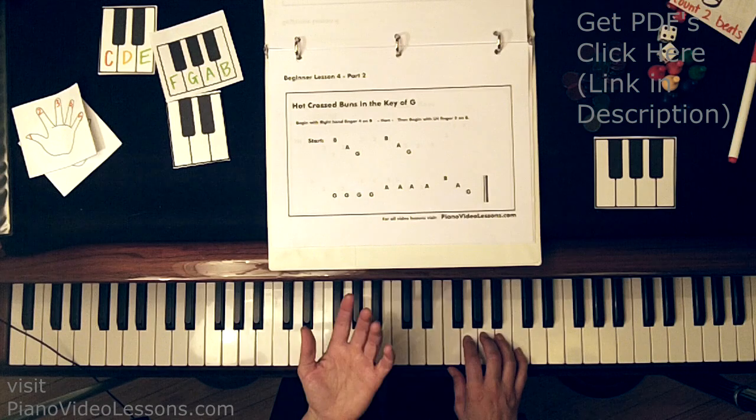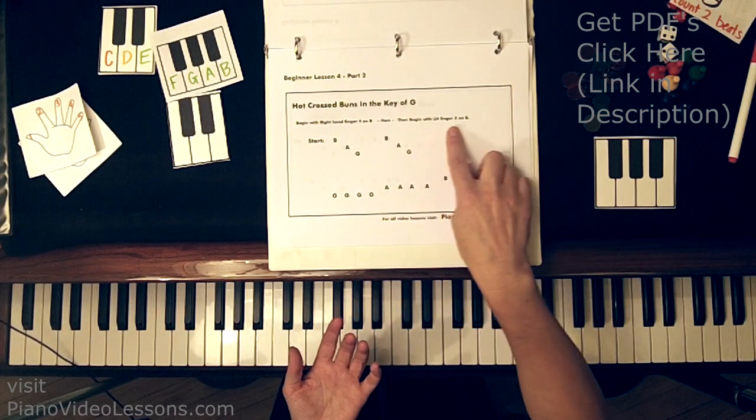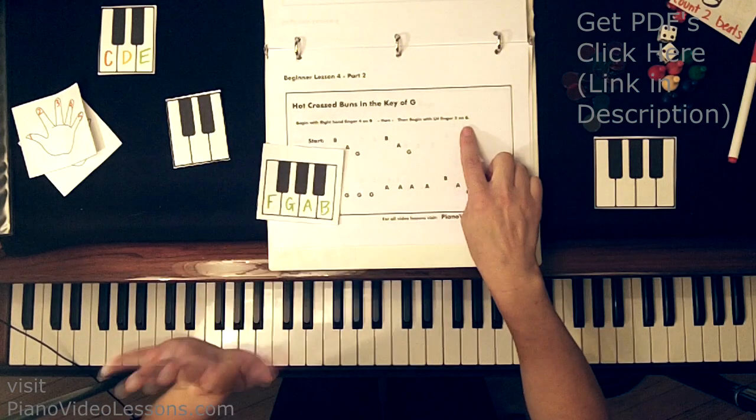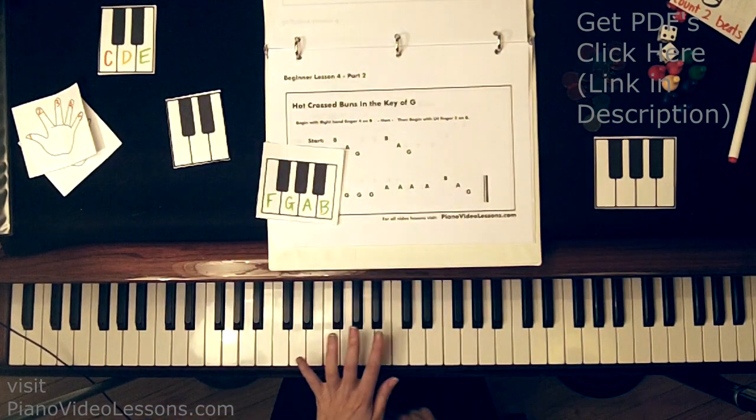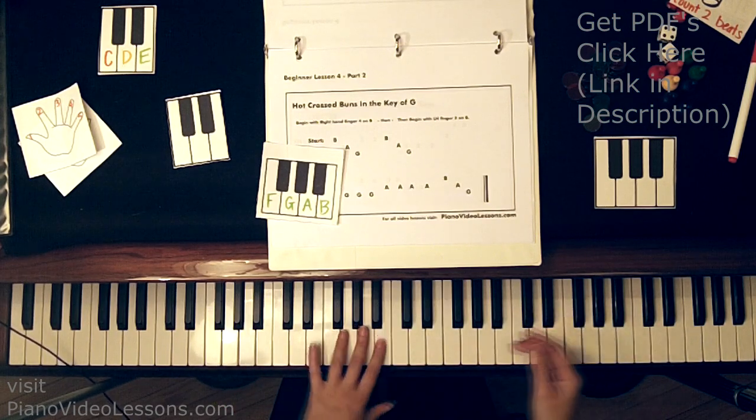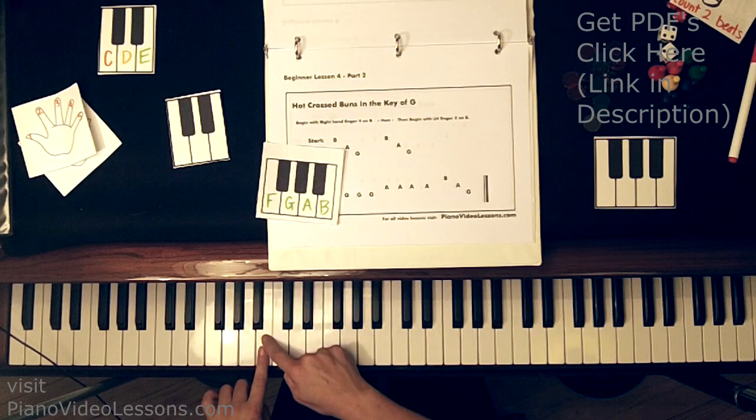And now let's try it with the left hand. So it says, then, begin with left hand finger 2 on B. Left hand, finger 2 on B. Take it to the piano. You can play this anywhere on the piano that you want. Let's try it way down here. So finger 2 on B.